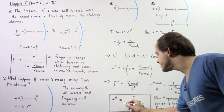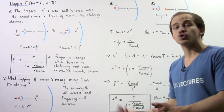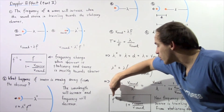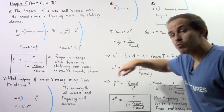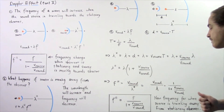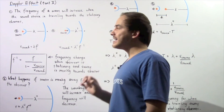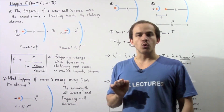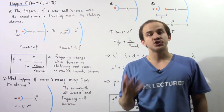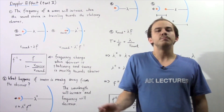Because the denominator (1 plus V source divided by V sound) is greater than 1, our F 2 prime will be less than F. This confirms that when the sound source is moving away from the stationary observer, the observed frequency will be less than the original frequency F.